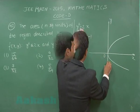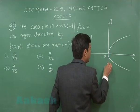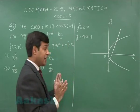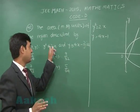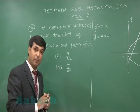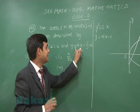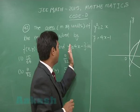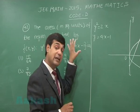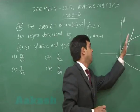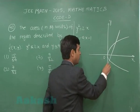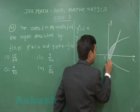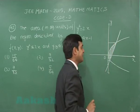We put x = 0, y is -1. y = 0, then x is 1/4. Line goes like this, right? Now the question says the area bounded by the curve such that y² ≤ 2x means interior of the parabola, and y ≥ 4x - 1. If I put origin, I observe 0 is greater than -1, equation is satisfied, means left side of this line, correct? So the required area is this one.